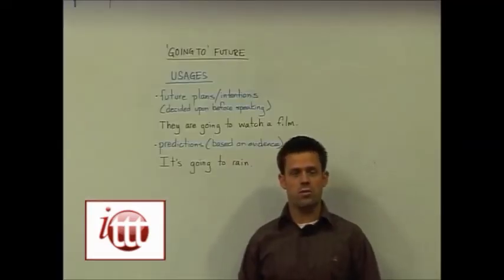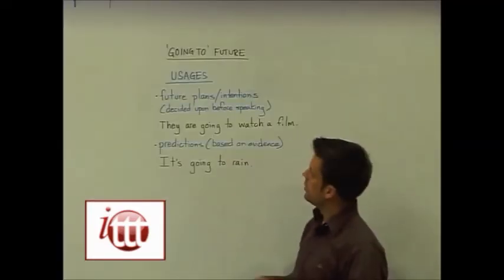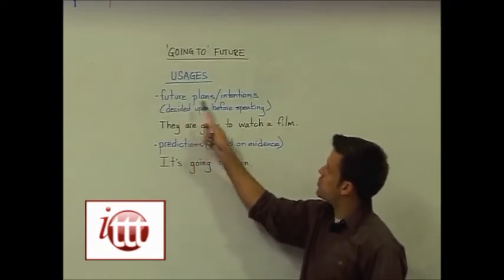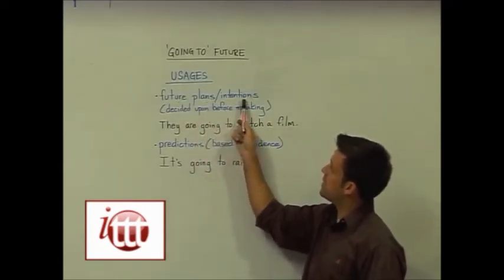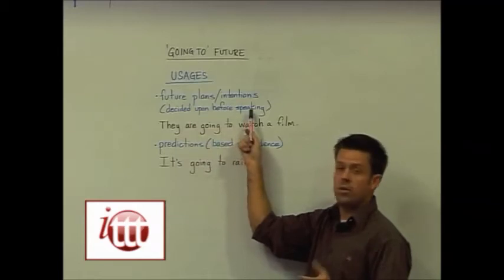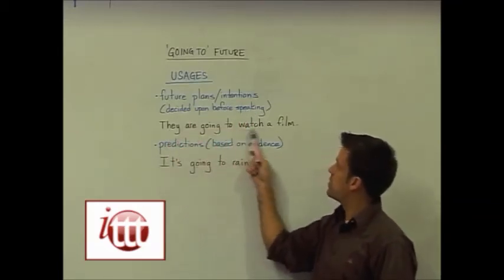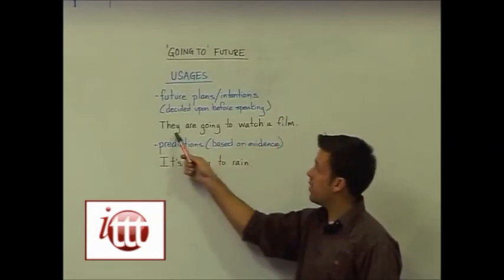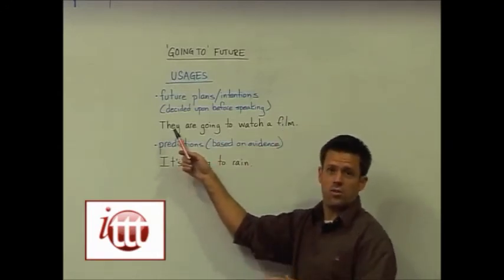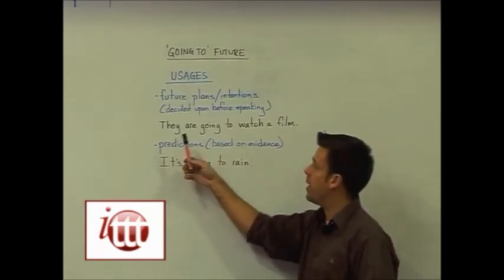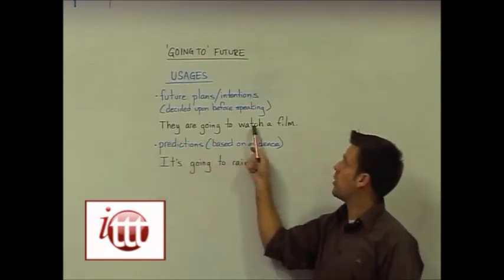There are two usages for the going to future tense. To indicate future plans with intentions that have been decided upon before speaking. For example, they are going to watch a film. I know that they have decided to watch a film and I want to make a statement about them.